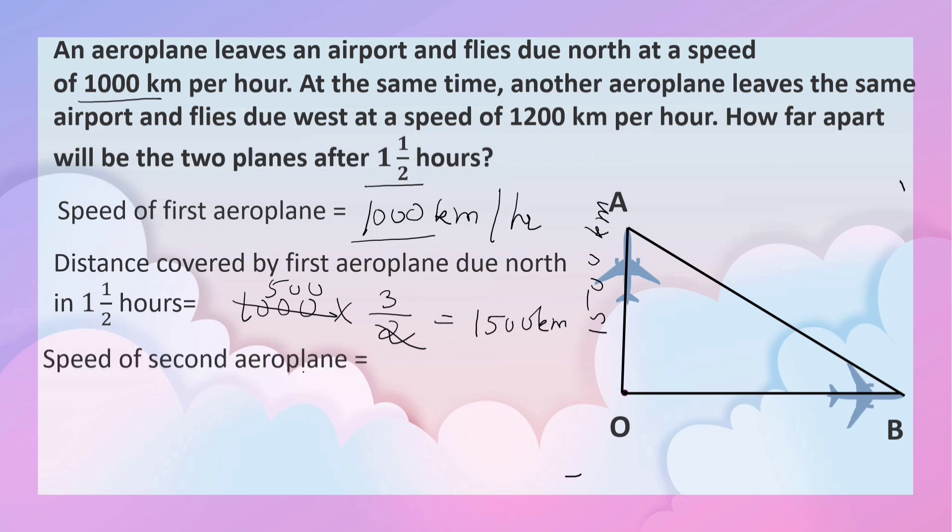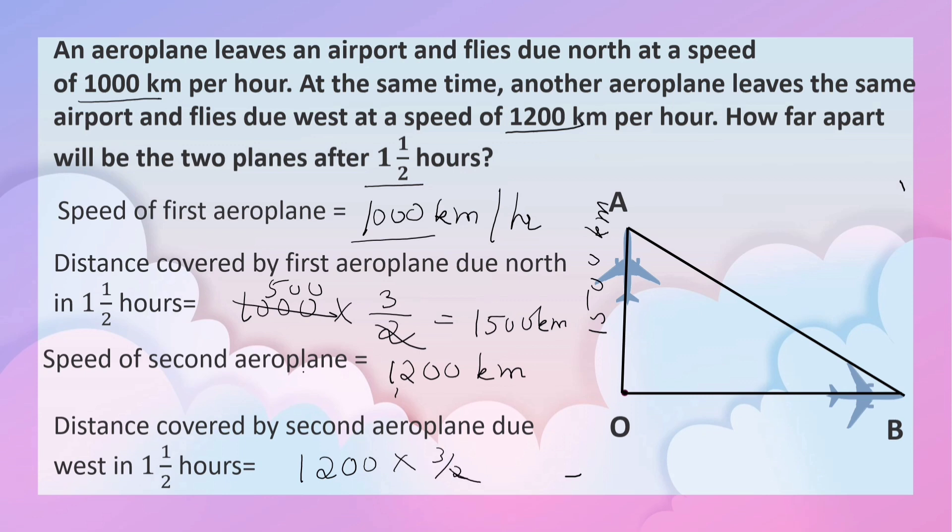Speed of the second aeroplane is 1200 km. Distance covered by the second aeroplane due west in one and a half hours: speed times time. Speed is 1200, time is 3 by 2. 2 ones are 2, 6s are - means 600. 600 times 3 is 1800 km.